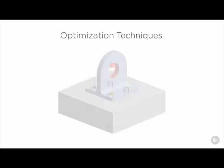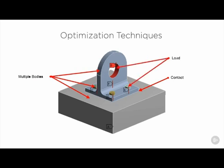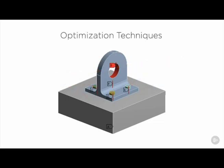Most optimization techniques can be very computationally expensive, meaning that we need a lot of computer power in order to solve these problems quickly. The complexity of our model as it is now is very high with the use of contacts, multiple bodies, and loading steps. So in order for the following calculations to be completed relatively quickly on your computer, we will need to simplify our model. Let's jump back into Workbench from where we left off in our last tutorial in order to prepare our geometry for the optimization process.